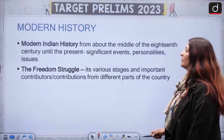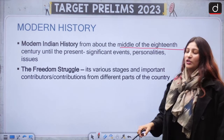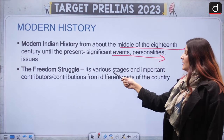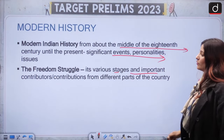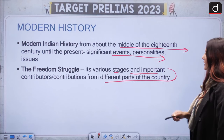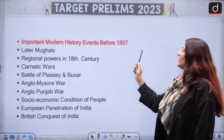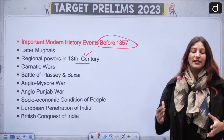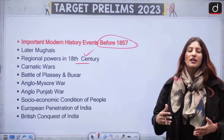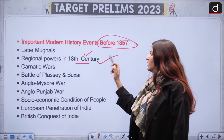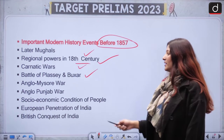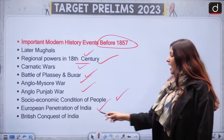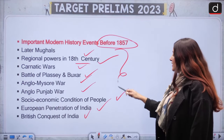Now comes very important Modern History. Modern Indian history from about the middle of the 18th century until the present — significant events, personalities, and issues. Events before 1857: the later Mughals, regional powers that arose from the decline of the Mughal Empire, Carnatic Wars, Battle of Plassey and Buxar, Anglo-Mysore and Anglo-Punjab Wars, socio-economic conditions, European penetration of India, and British conquest of India.